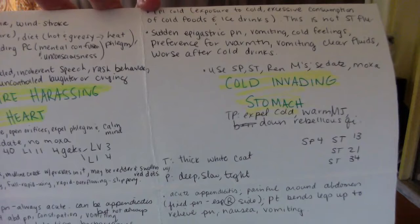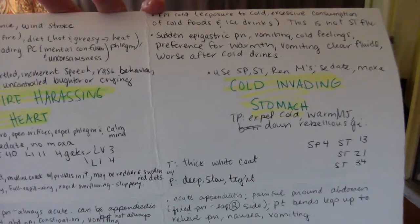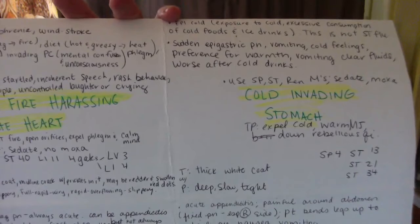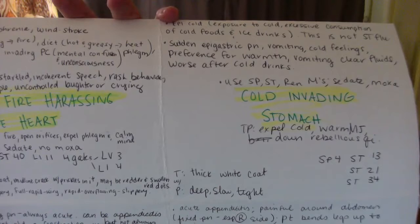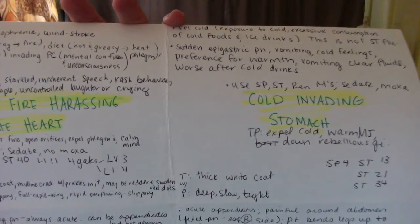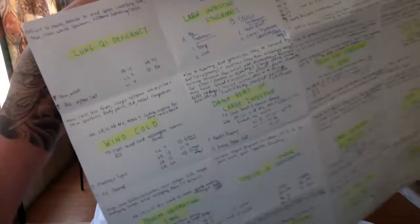The tongue and pulse for cold invading the stomach is a thick white coat, and the pulse is deep, slow, and tight. Treatment principle is to expel the cold, warm the middle jowl, and direct down rebellious chi. We're going to use the stomach, spleen, and ren meridians. Sedate and use moxa. The points combo is spleen four, stomach 13, stomach 21, and stomach 34.